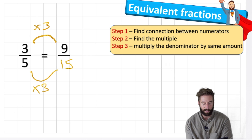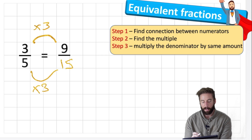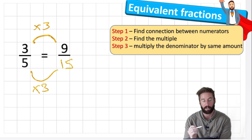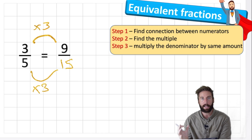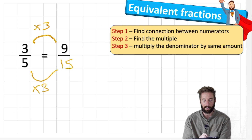A couple of important things to point out. First, one really important rule: to keep fractions equivalent we need to do the same process to the top as we do to the bottom - the same process to the denominator as to the numerator. Whether we times it by a million, divide by five, or times by two, we need to do the exact same thing to the numerator. It's really important to keep those multiplications or divisions the same.